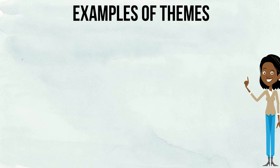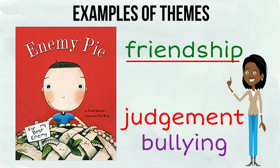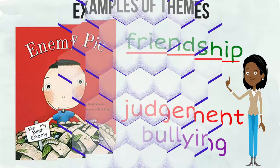In the story Enemy Pie by Derek Munson, there are a few themes such as judgment and bullying, but the main theme is friendship. Here the main character learns how friendships can be formed in the least expected ways.